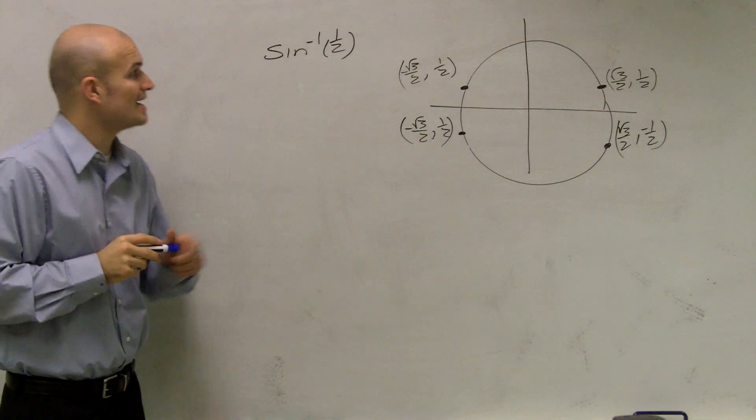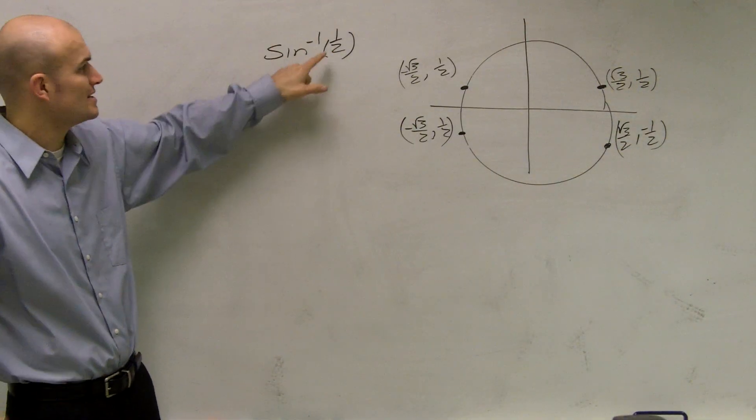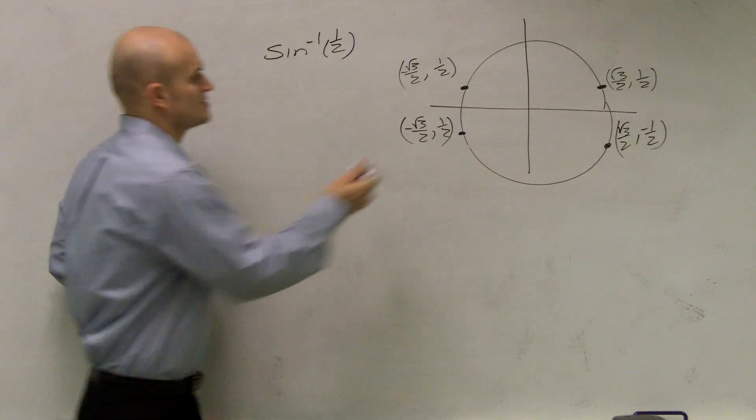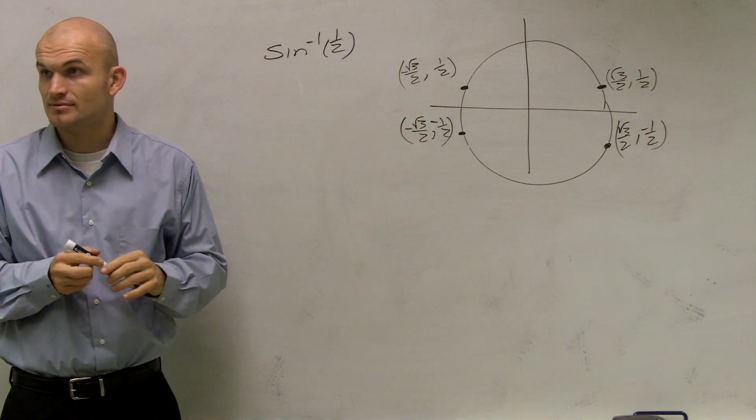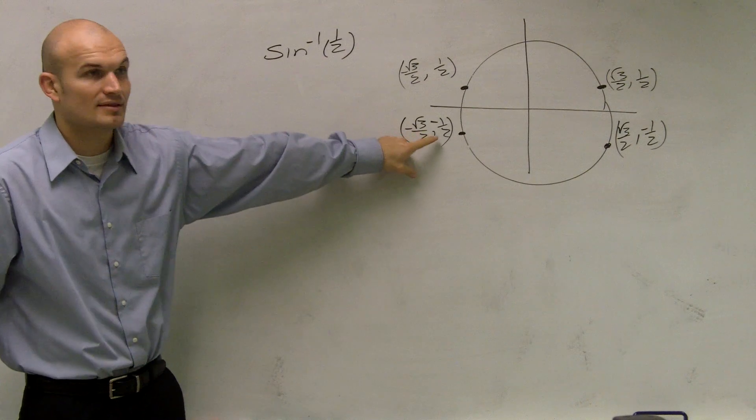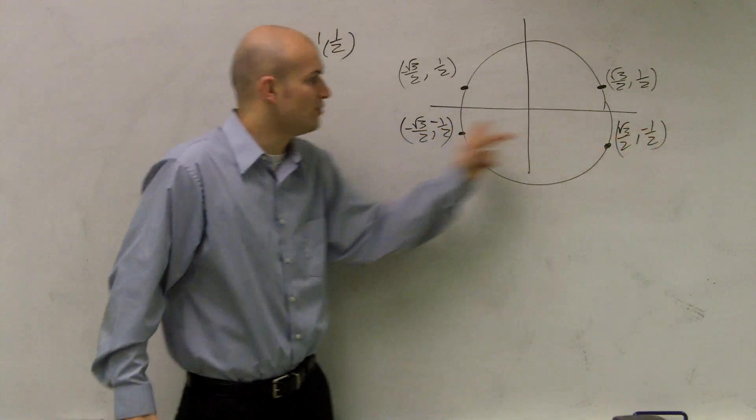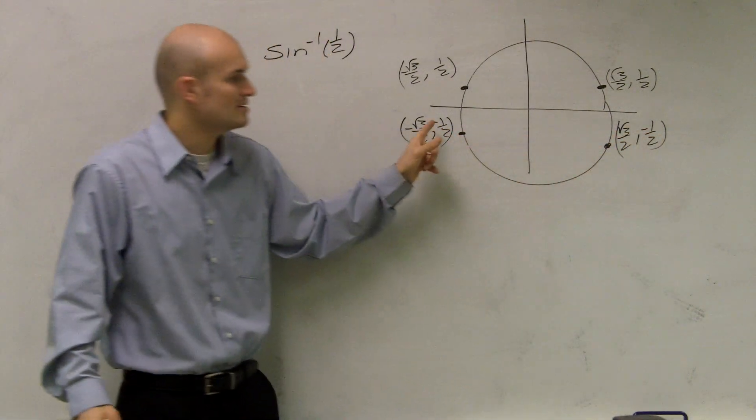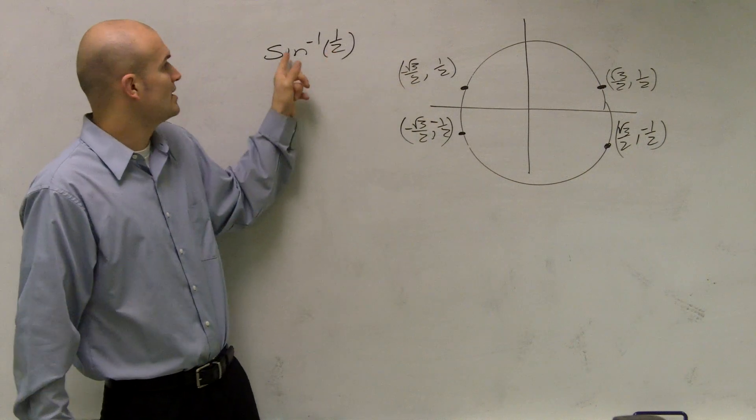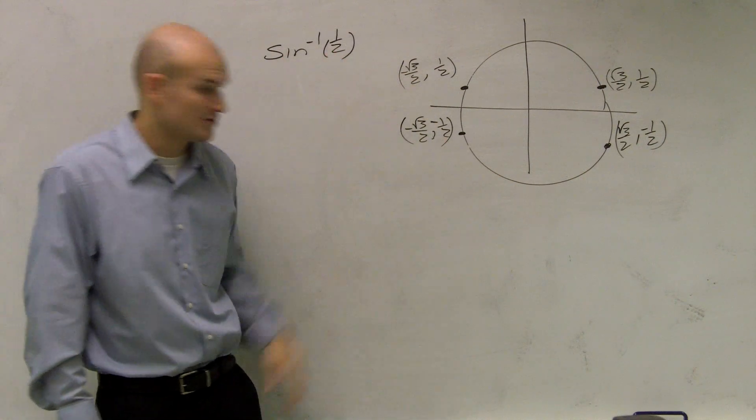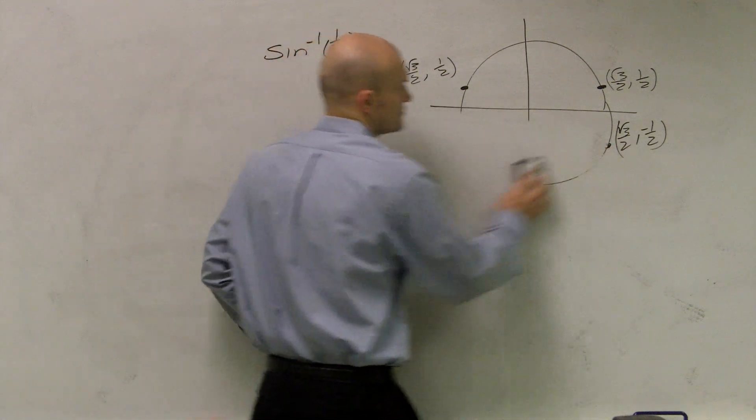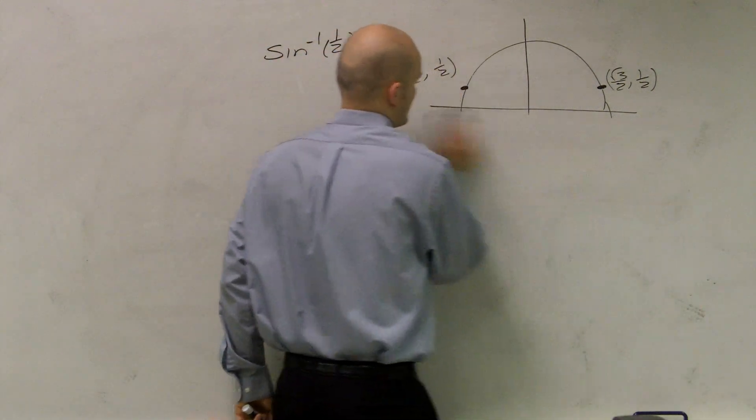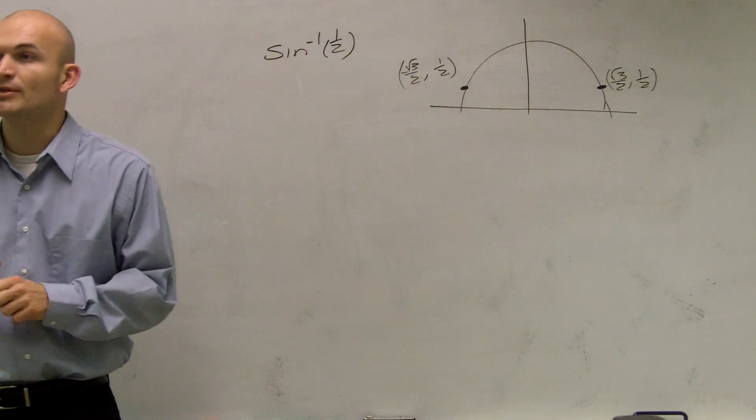Those are all your possibilities when sine is going to be 1/2. But then we look at this. We're only concerned about the positive values of it, correct? So obviously, these two points aren't going to work for us because sine is actually -1/2, and we're looking for the inverse sine of positive 1/2. So let's eliminate these two automatically.